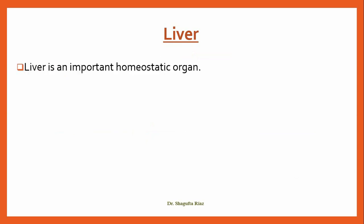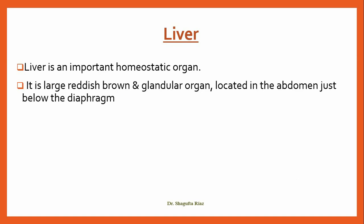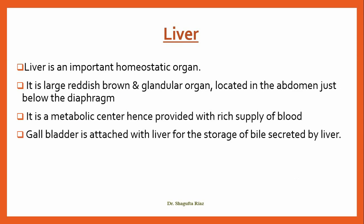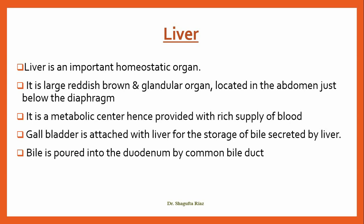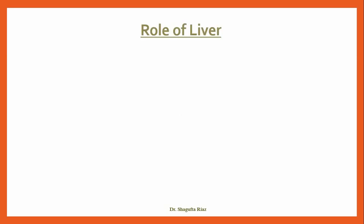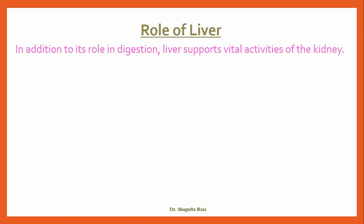We will discuss the important organs of the human excretory system. The liver is a very important organ in digestion, but it also acts as a homeostatic organ. It is a large, reddish-brown, glandular organ located in the abdomen just below the diaphragm. It is a metabolic center and is provided with a rich supply of blood. The gall bladder is attached to the liver for storage of bile secreted by the liver. Bile is poured into the duodenum by the common bile duct, and other products are released into the blood via the hepatic vein.